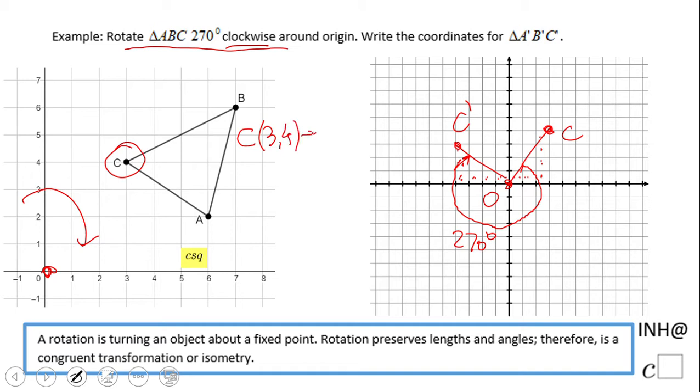becomes negative 4 and positive 3. So (x, y) becomes (y, negative x). We have negative 4, it was positive 4, so that would be negative 4. And the last one is 3, it was 3. This is the rule: we switch x and y and also switch the sign.